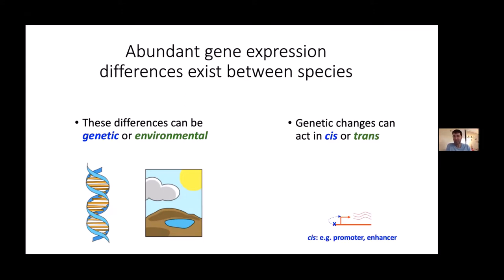Cis would be a mutation linked to the gene it regulates on the same chromosome — for instance, a promoter or enhancer region — so it only affects the copy it's linked to. In contrast, trans-acting changes can be encoded anywhere in the genome; for example, an amino acid change in a transcription factor that can go and regulate genes throughout the genome. Trans involves some kind of diffusible intermediate and doesn't have to be linked to the gene it regulates.